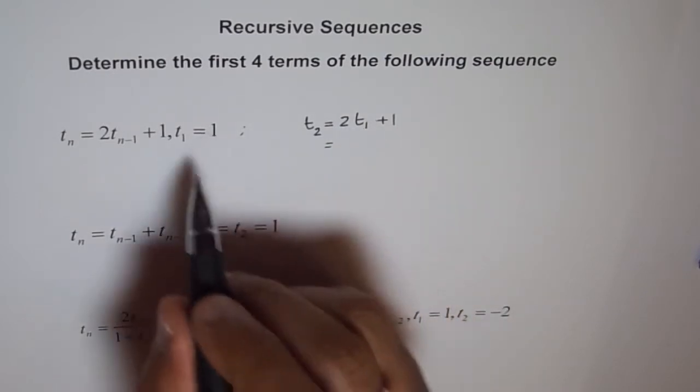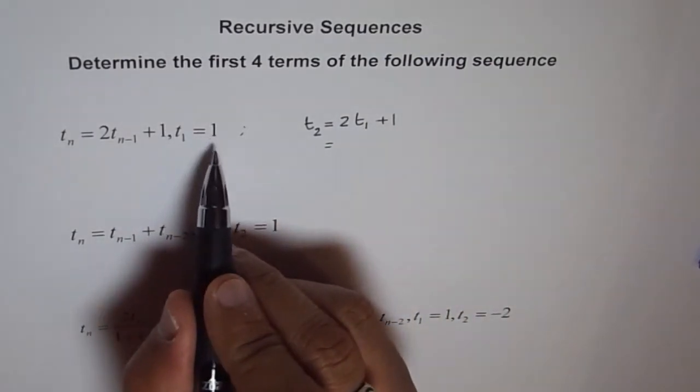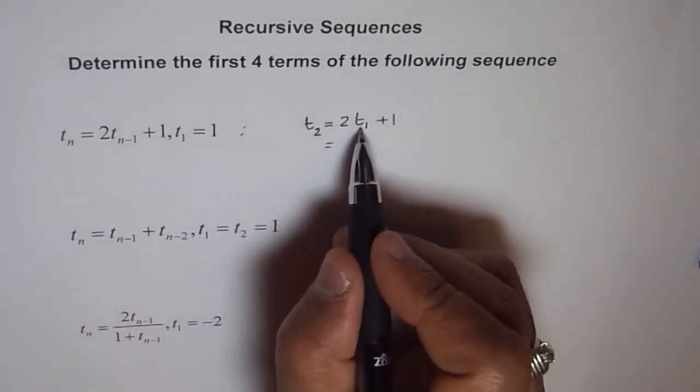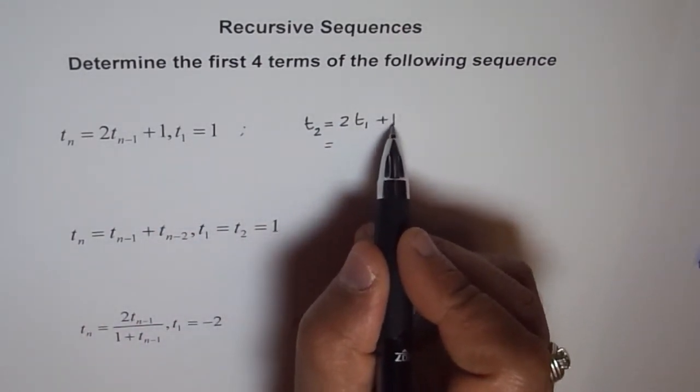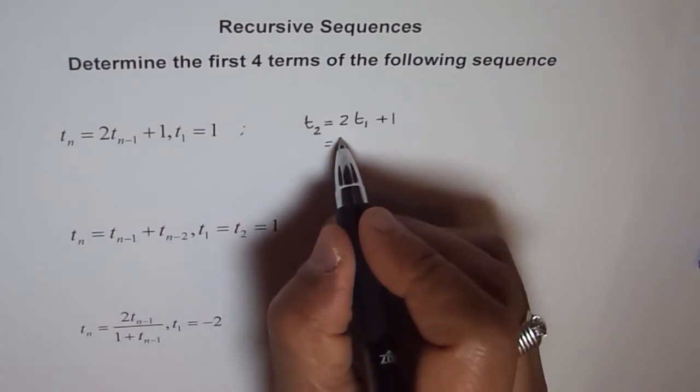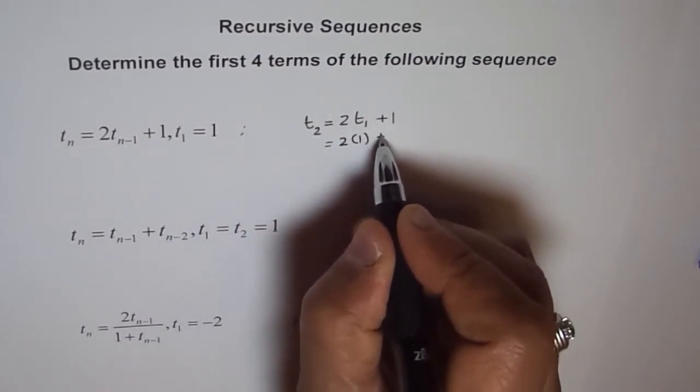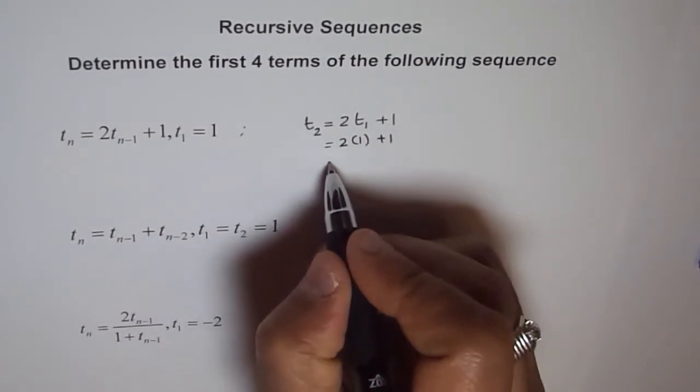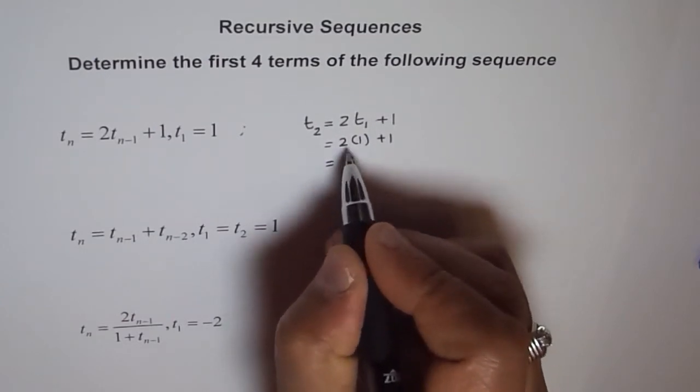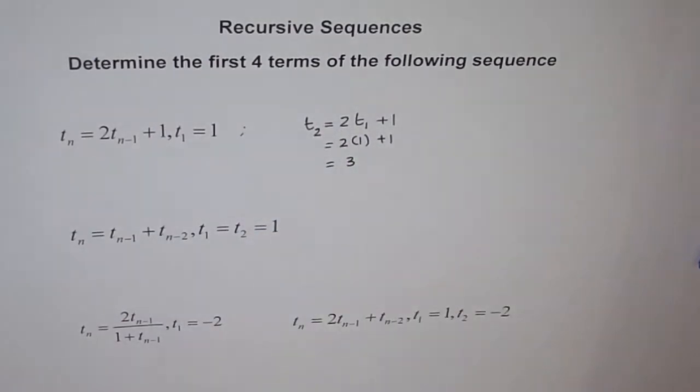Now what is 2 times T1? T1 is 1 for me, so I can use this value. So 2 times 1 plus 1, and I get this value as 3. So I know T2 is 3 for me.